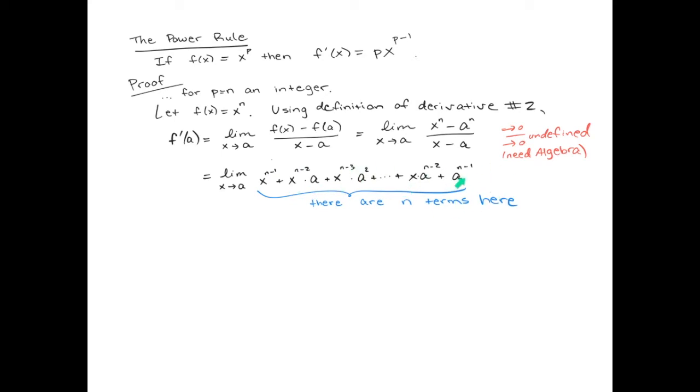If you do that for all the other terms, it turns out that every single one of these terms gives you an a^(n-1) power, and there's n terms total. So our final answer is that there's n*a^(n-1) terms, and there you go. That's the proof of the power rule.